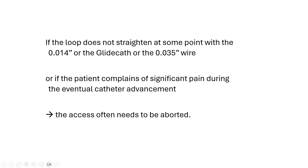If the loop does not straighten at any point with the 0.014 inch wire, the glide cath, or the 0.035 inch wire, or if the patient complains of significant pain during the 6 French catheter advancement, the access often needs to be aborted.